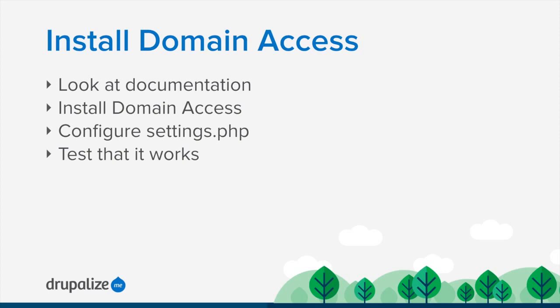In this lesson, we're going to get hands-on with the domain access module by actually getting it installed and getting a Drupal site up and running so that we can dive into more configuration. We're going to start off by looking at the documentation, then get domain access set up, which will also involve configuring our settings.php file. There's a special include that you need to have, as there are some additional steps required beyond a normal Drupal module installation. Once everything is in place, we're going to test and make sure the installation completed correctly. Let's dive in.